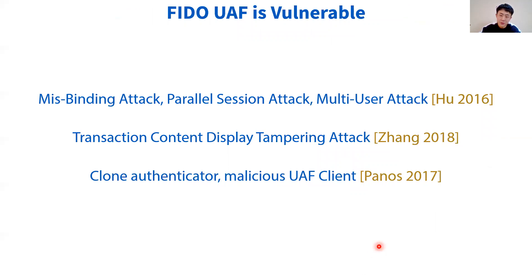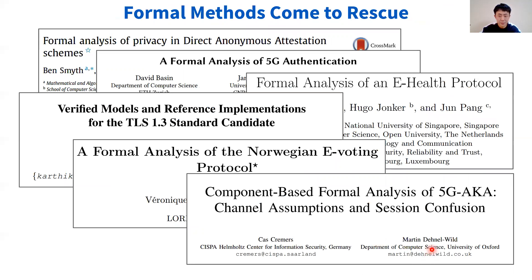Like all other protocols, FIDO UAF is vulnerable. Manual analysis has found some vulnerabilities in the protocol. However, they lack a formal foundation and are not capable of systematically verifying the properties of UAF. Therefore, we resort to formal methods. There are many formal verification tools which can automatically find attacks on the protocol and prove if a protocol satisfies the required security properties. Formal methods have helped the designs and revisions of real-world protocols, such as 5G or TLS 1.3.